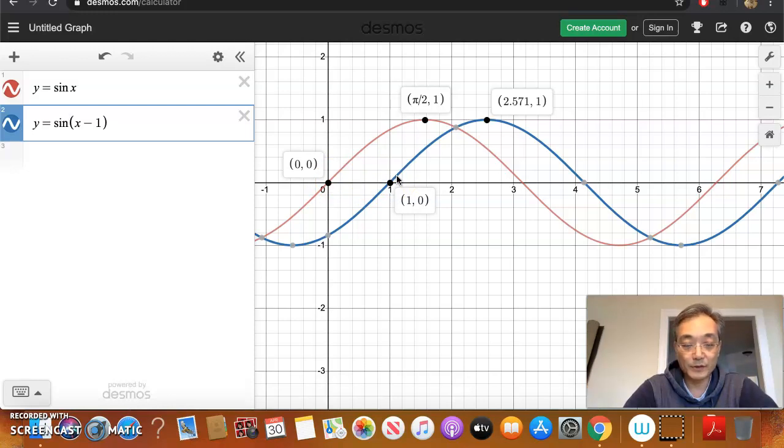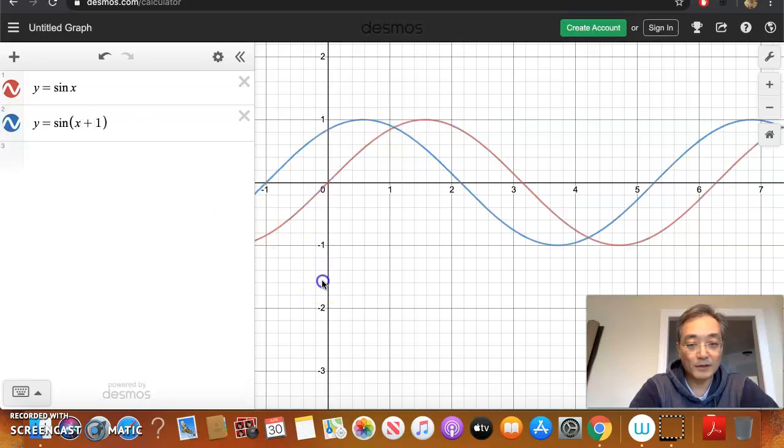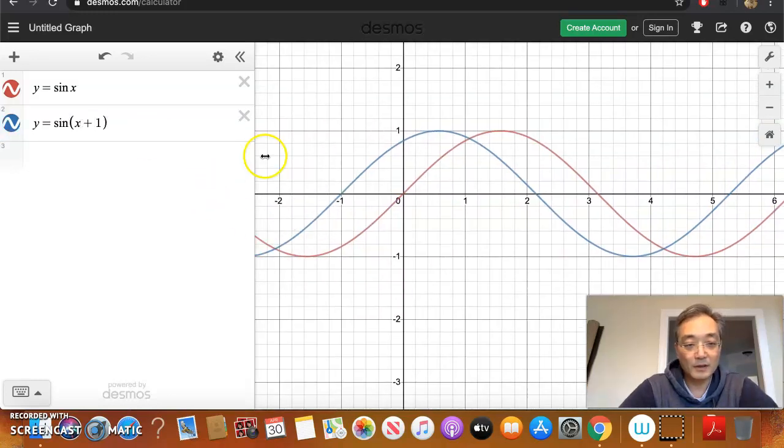Likewise, if I were to take that same function and now add 1 to the x, now look what happens. So we know that horizontal shifting is counterintuitive. So if you were to add 1 to x, instead of now going to the right, it's going to go 1 unit to the left. So this point is now shifted over 1 unit to the left.